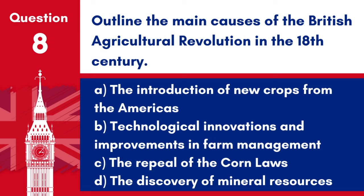Question 8: Outline the main causes of the British Agricultural Revolution in the 18th century. a. The introduction of new crops from the Americas. b. Technological innovations and improvements in farm management. c. The repeal of the Corn Laws. d. The discovery of mineral resources. Answer: b. Technological innovations and improvements in farm management. The British Agricultural Revolution was characterised by significant technological innovations and improved agricultural practices, leading to increased productivity and the ability to support a growing population.